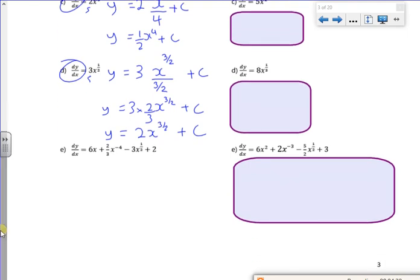Same with differentiation, I can do each term separately. So I'm going to have 6 times by x squared over 2. So that's 3x squared. I'm going to have 2 thirds of x to the minus 3 over minus 3. So that'll be minus 2 over 9 x to the minus 3. I can put the x to the minus 3 on the bottom if I wanted to. Minus 3 lots of x to the 3 over 2, over 3 over 2. Times by 2 thirds, the 3's will cancel, minus 2x to the 3 over 2.